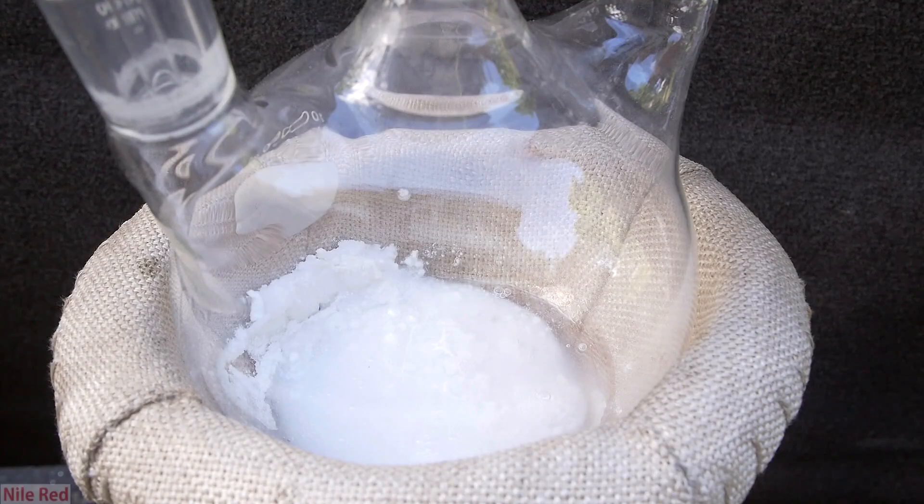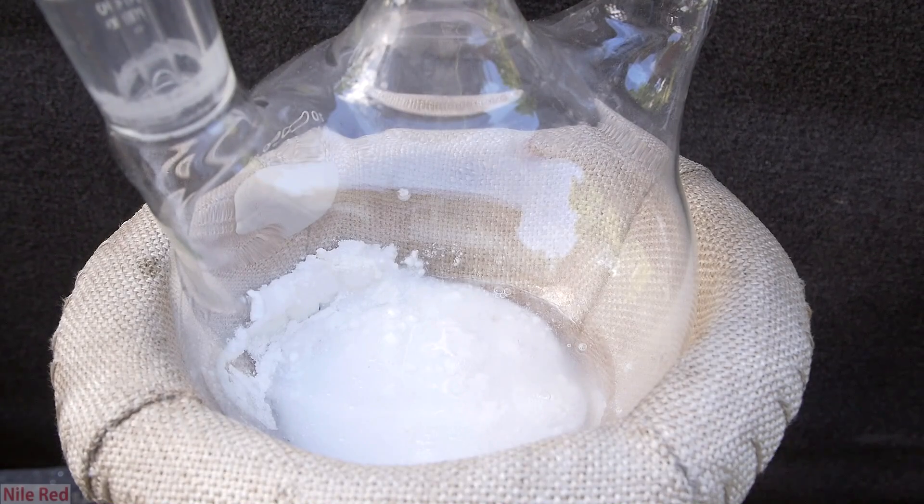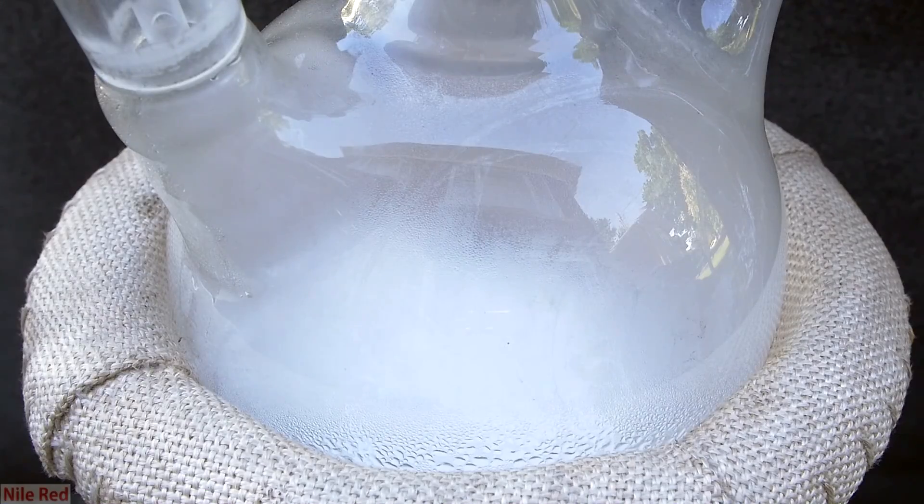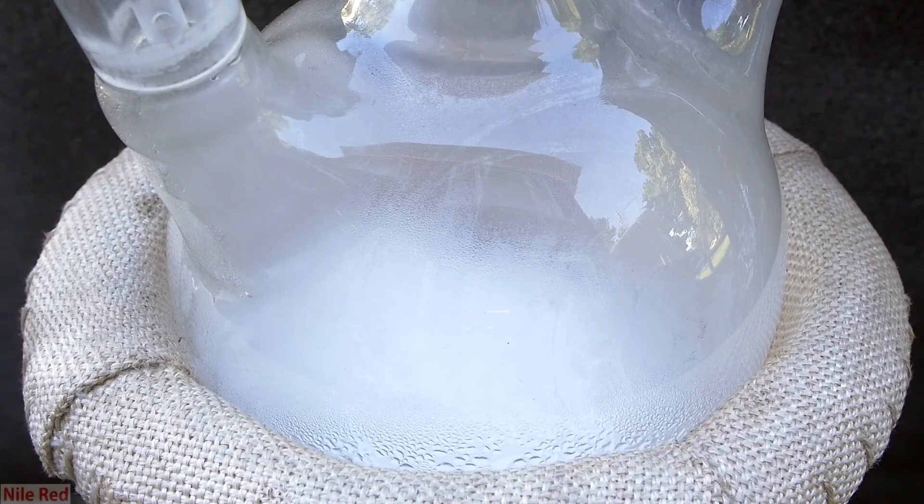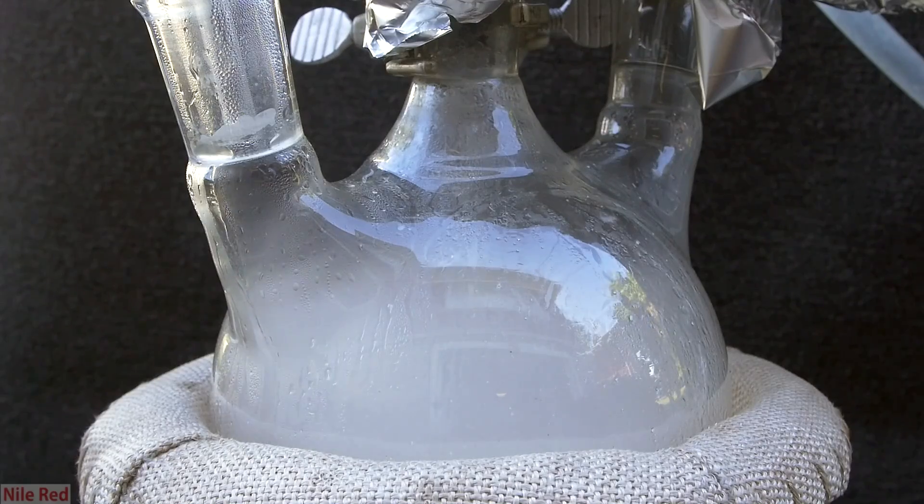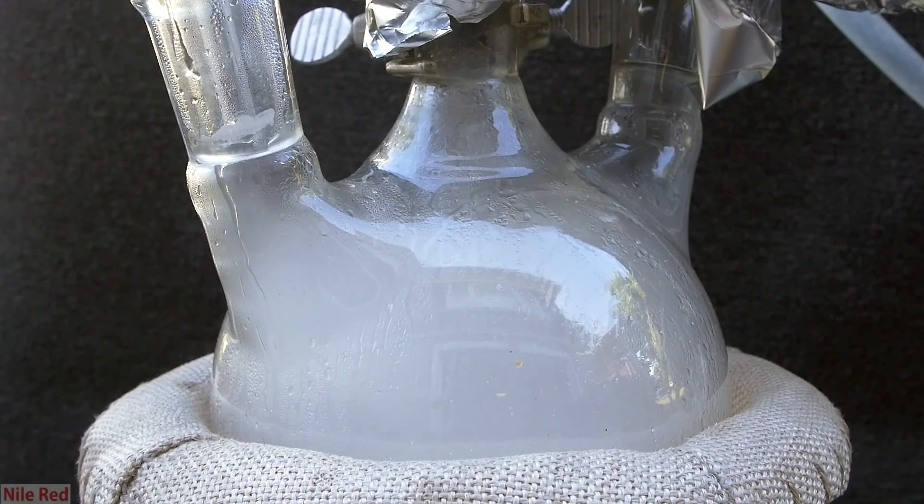To start things off, we can crank the heat up a little bit, and initially, we really don't see much of anything happening. However as things heat up, a lot of water condensation will start to come off, and the flask will get cloudy. When we look at the flask from the side, we can see that it's producing a lot of white vapor.